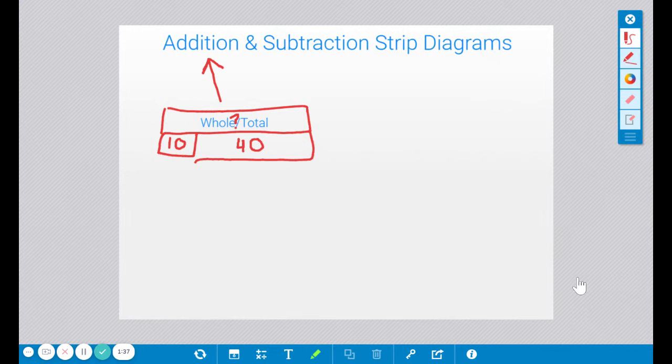Then we have subtraction. Here's our strip diagram, and I'm actually going to use those same numbers, but it's going to look different. Now, it's not exactly as straight, but we're getting the idea. So for this one, let's say I have 50 here, and I have 40 here, but I am missing this little part.